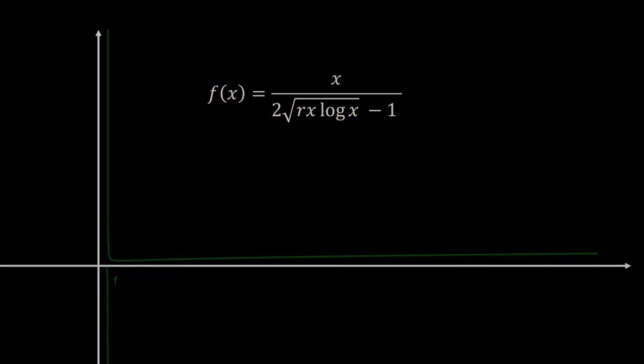Now if we plot the function x/(2√(r·x·log x) - 1), this should look like this. As x tends to infinity, the graph also tends to infinity. The particular graph you are looking at here I have drawn for r = 500.